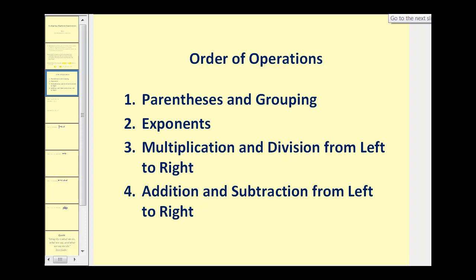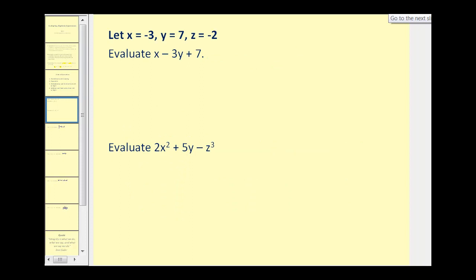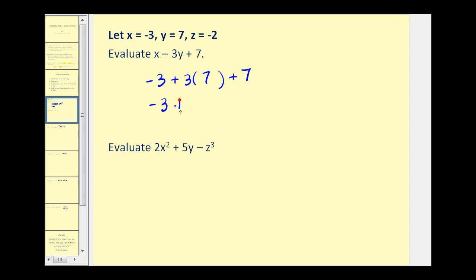So let's look at several examples. Here we're given that x equals negative 3, y equals 7, and z equals negative 2. We want to evaluate x minus 3y plus 7. Well, x is equal to negative 3, so we'll have negative 3 plus 3 times y, but y is 7, plus 7. Now we'll follow the order of operations and multiply first. 3 times 7 would be 21, so we have negative 3 plus 21 plus 7. Adding from left to right, negative 3 plus 21 is 18, plus 7 equals 25.